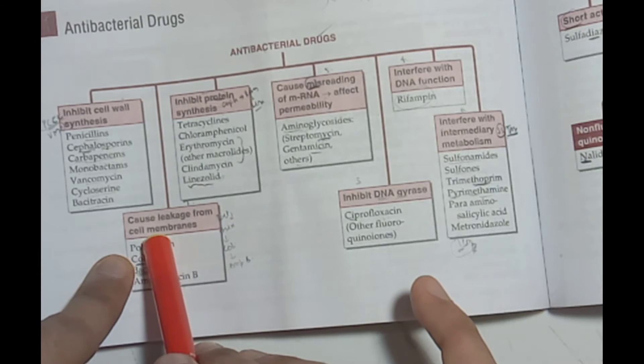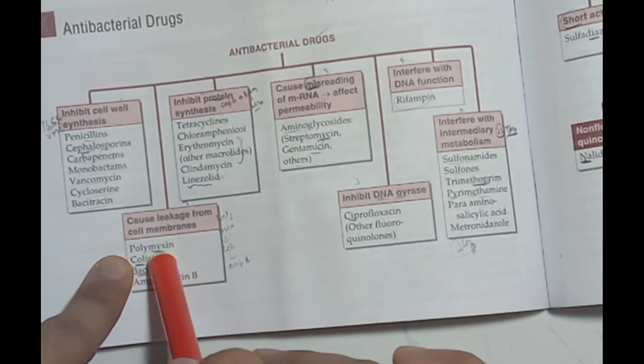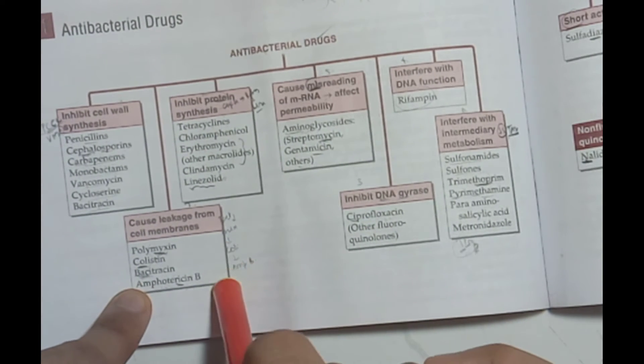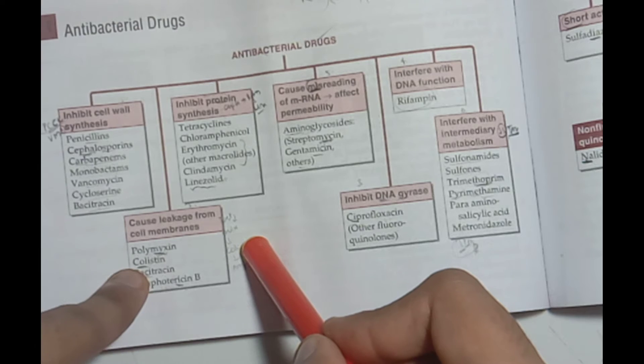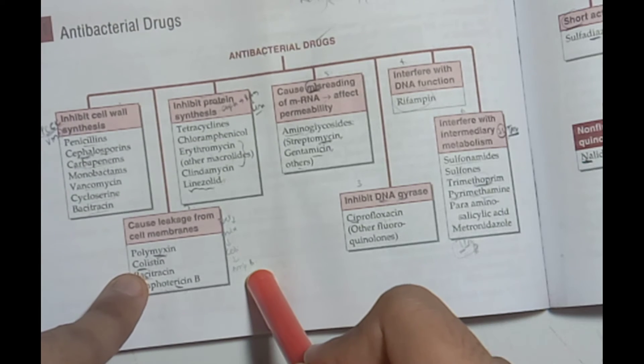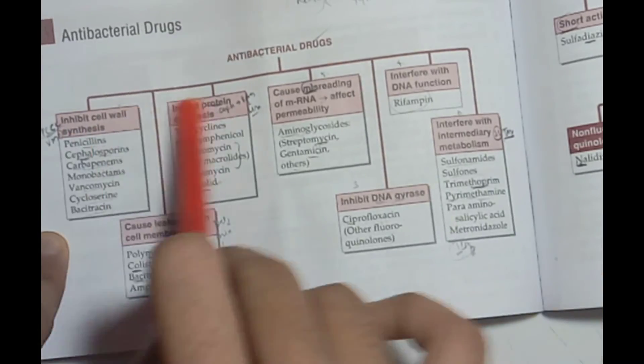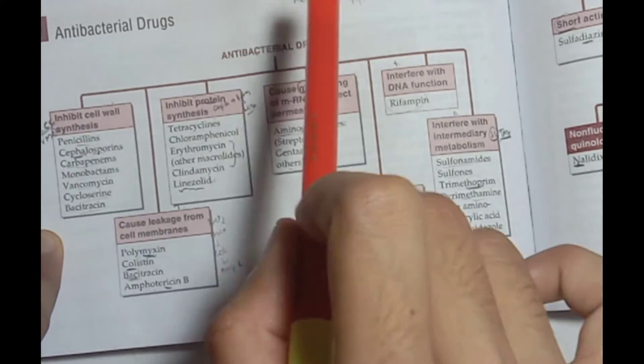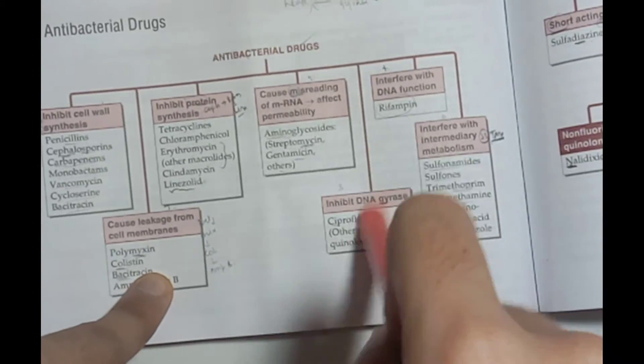This will be easy: cell wall synthesis, protein synthesis, then mRNA misreading, DNA function interference, then intermediary metabolism, DNA gyrase inhibitor, and then leakage from cell membrane.